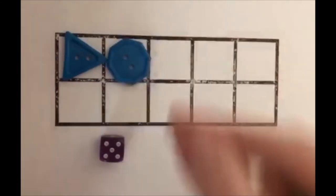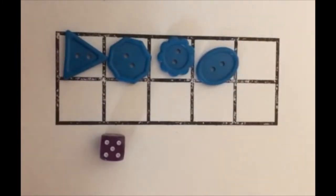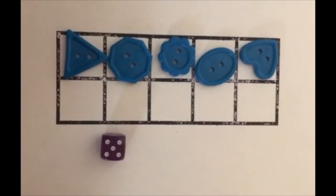1, 2, 3, 4, 5. And you can see in the 10 frame that 5 add 5 would make 10. So you can start to see the relationships within the number 10.